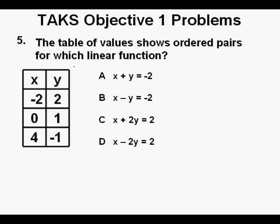Problem 5: The table of values shows ordered pairs for which linear function? We have three ordered pairs: negative 2 comma 2, zero comma 1, and four comma negative 1. The first number represents the x value and the second number represents the y value.